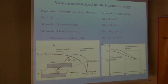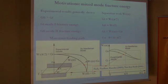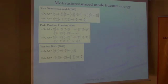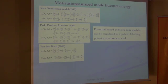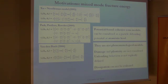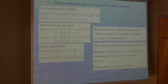The same result is shown in the Cartesian diagram. Other models verify this condition, such as the Park-Paulino-Roesler and the van den Bosch model. These three models — the XU-Needleman, the Park, and the van den Bosch model — are potential-based cohesive zone models, which can be considered as a particular case of the bonding potential model, and are not phenomenological models. They do not take into account either damage or plasticity, and the unloading behavior is not explicitly defined, so dissipation cannot be evaluated.